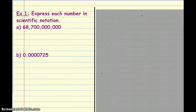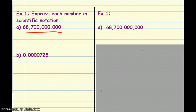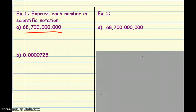Let's get some practice. We're going to express each of these numbers in scientific notation. The way we're seeing these numbers right now — 68,700,000 — this is what we call standard form. We have a decimal point and we need to move that decimal point before the first non-zero digit. In this number, 68,700,000, we don't see the decimal, but it's right after the number. Our first non-zero digit is between the six and the eight, so we have to move the decimal all the way from the end over to that position.